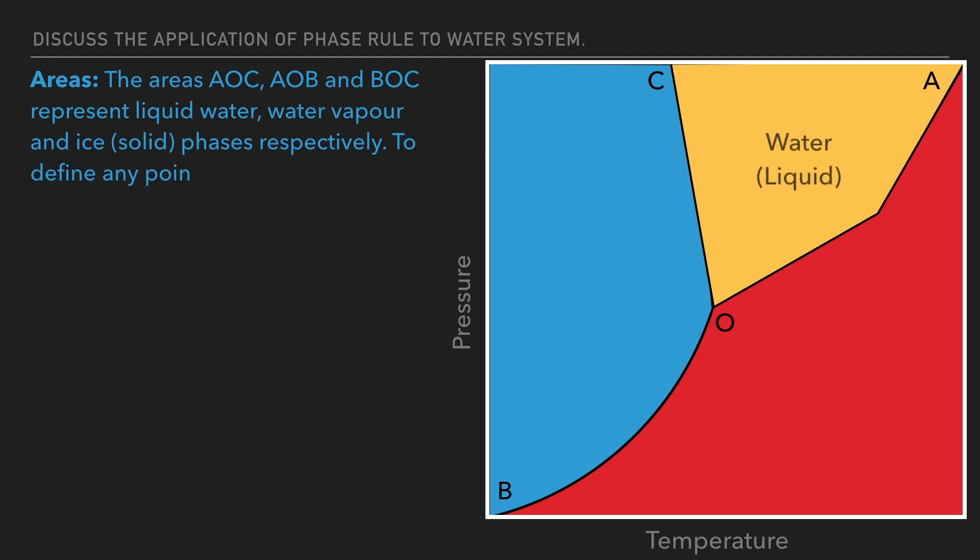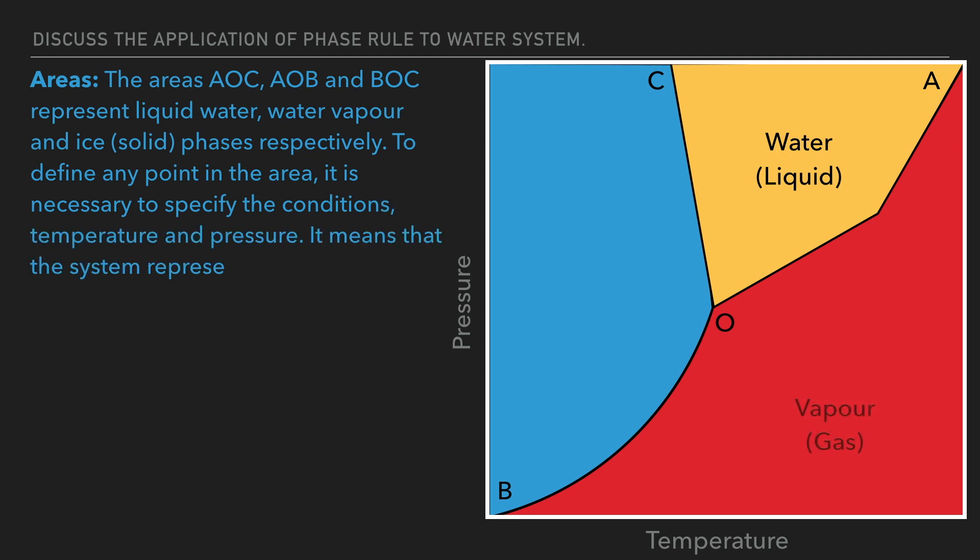To define any point in this area, it is necessary to specify the conditions temperature and pressure. It means that the system represented by each area has two degrees of freedom. This can be verified using phase rule equation.